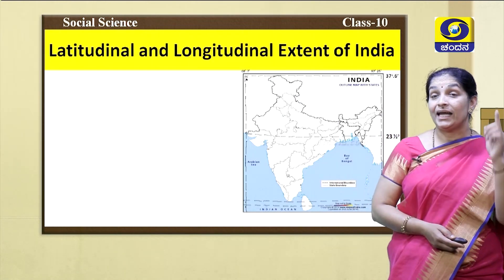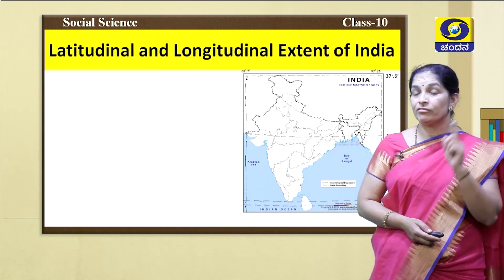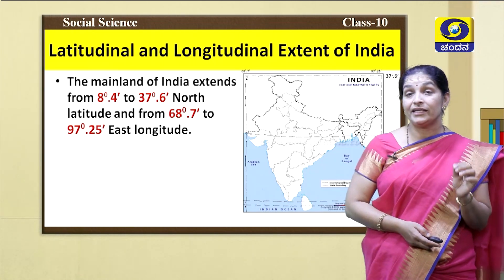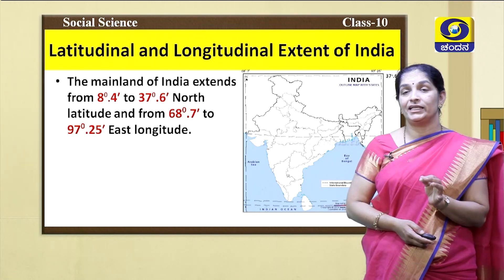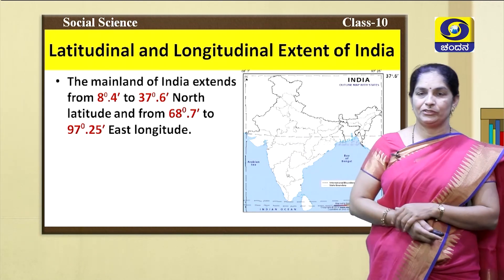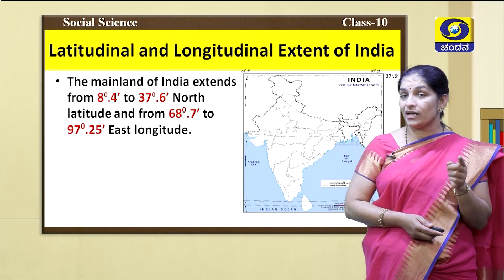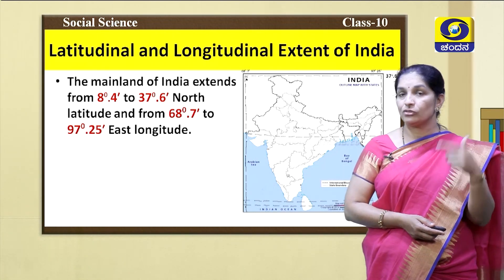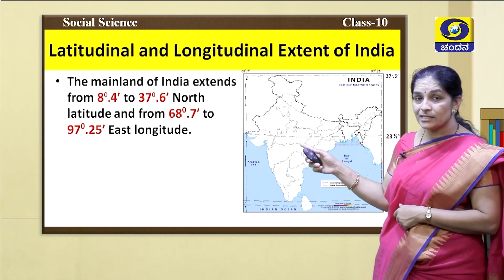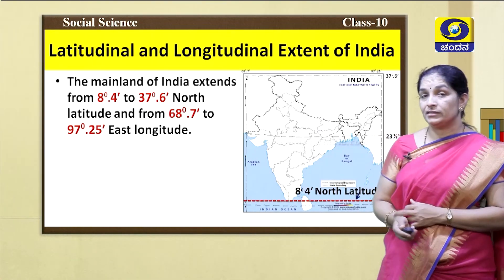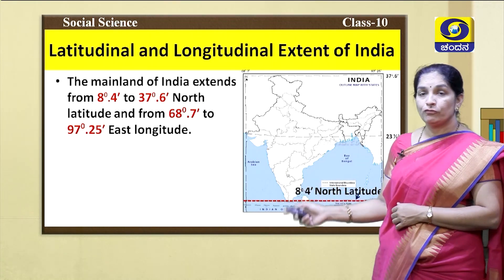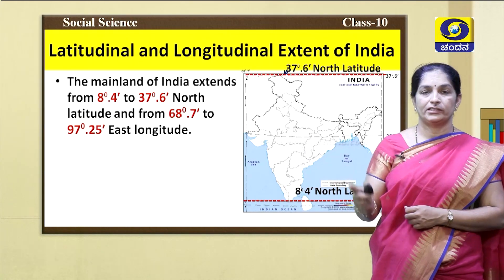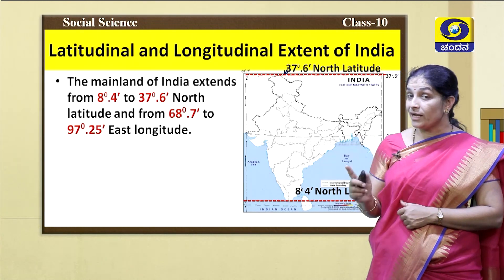Now let us know the latitudinal and longitudinal extent of India. The mainland of India extends from 8 degrees 4 minutes to 37 degrees 6 minutes north latitude. The latitudes are measured in degrees and the distance between each latitude is divided into minutes. So we read this as 8 degrees 4 minutes. Both are north latitudes because India is situated in the northern hemisphere.